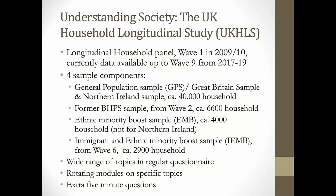The UK HLS consists of four different sample components. There's a general population sample, the GPS, which has a Great Britain sample and a Northern Ireland sample. Some variables are measured separately for these two samples. Jointly they consist of about 40,000 households. Another sample component is the BHPS — the British Household Panel Study — which was the predecessor of the UK HLS and was incorporated at wave two.